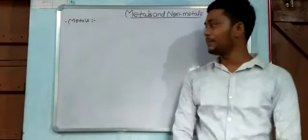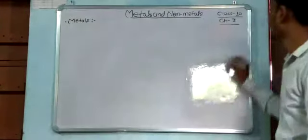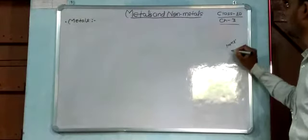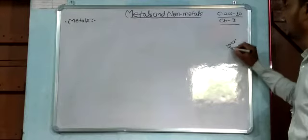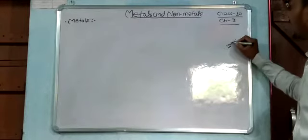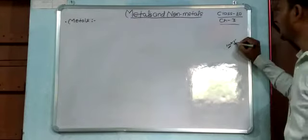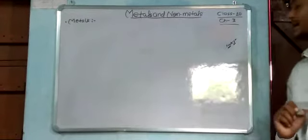For example, Na+ Cl-. Here this Na has positive ions and this Cl has negative ions.